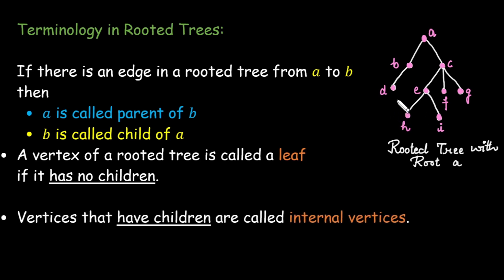And a vertex that has one or more children is called an internal vertex. Like in this case A has two children so we call A an internal vertex. B has one child so we call it an internal vertex.